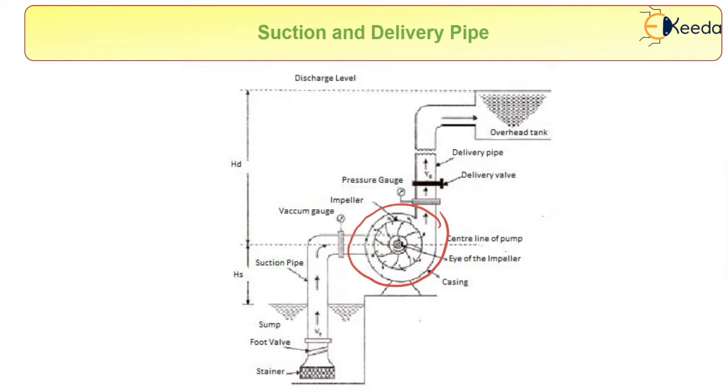From here it will go through the eye of the impeller. There is one suction pipe which is connected to the bottom and one delivery pipe which is connected to the top. Here we have a strainer, then a foot valve, and from here the water is going to be lifted.